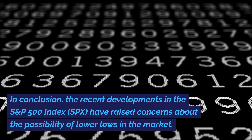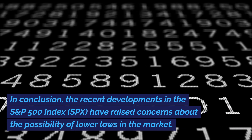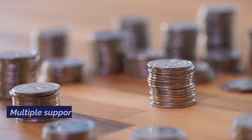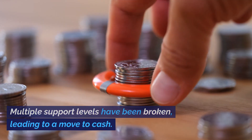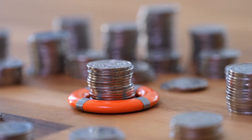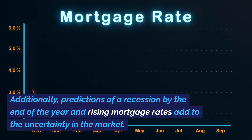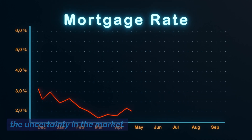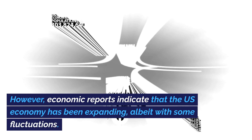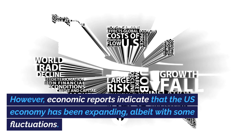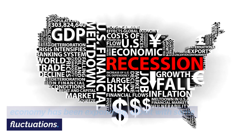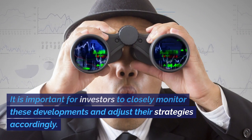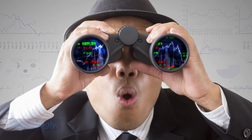In conclusion, the recent developments in the S&P 500 Index (SPX) have raised concerns about the possibility of lower lows in the market. Multiple support levels have been broken, leading to a move to cash. Additionally, predictions of a recession by the end of the year and rising mortgage rates add to the uncertainty in the market. However, economic reports indicate that the U.S. economy has been expanding, albeit with some fluctuations. It is important for investors to closely monitor these developments and adjust their strategies accordingly.